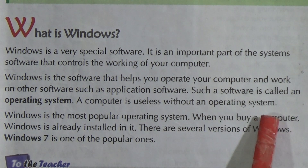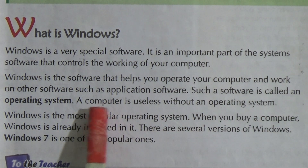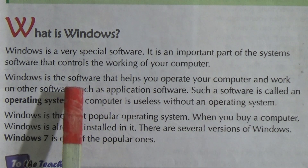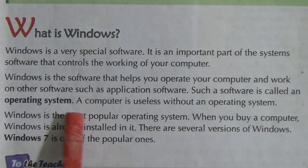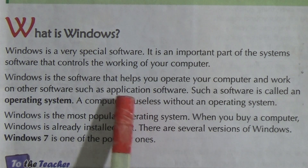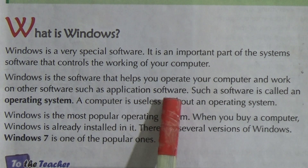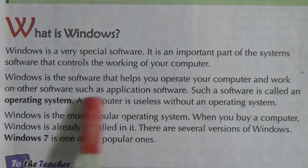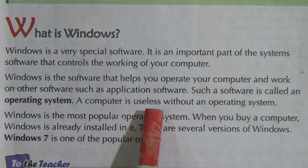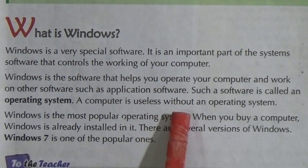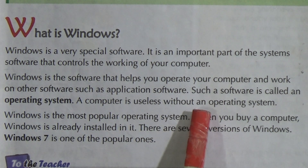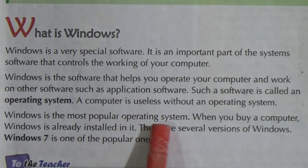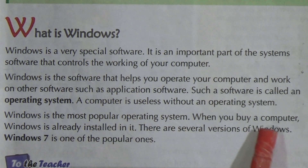A computer is useless without an operating system. If you want to use your computer, you first need to have an operating system like Windows. Operating systems are system software, and if you want to use application software, you need to have an operating system like Windows first. Windows is the most popular operating system.